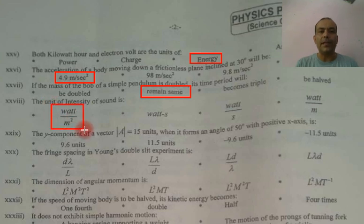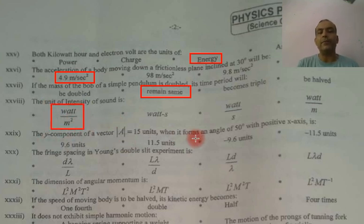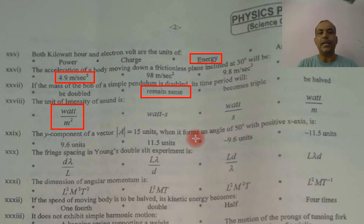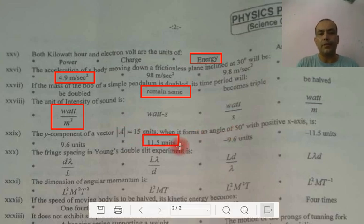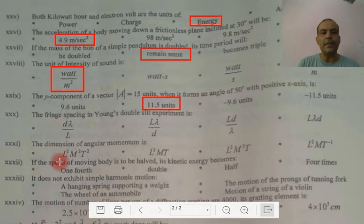It is g sin θ. The value of A is 15, sin is 50°, so this becomes 11.5. Fringes spacing is lambda L upon D.